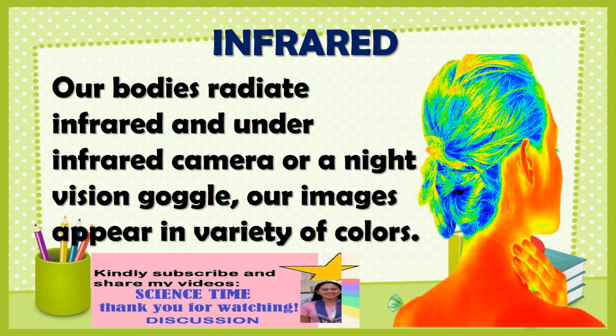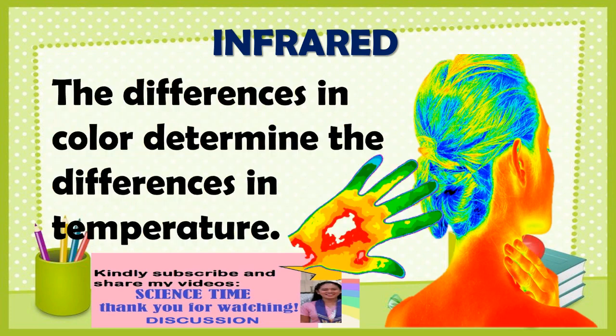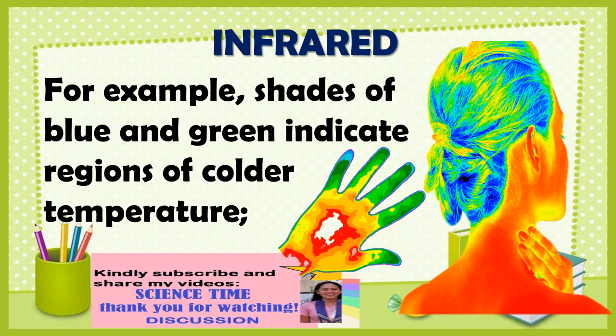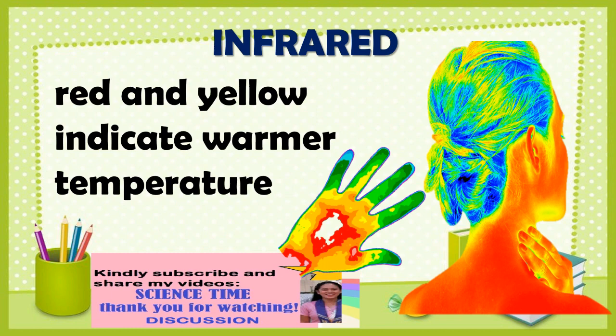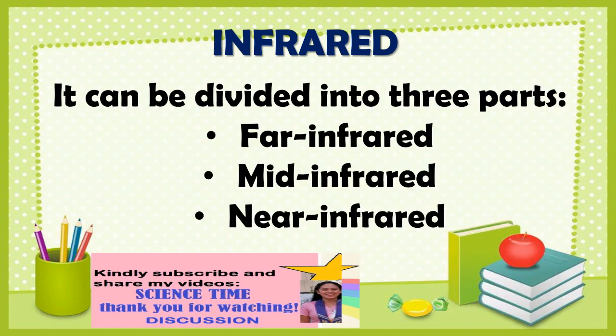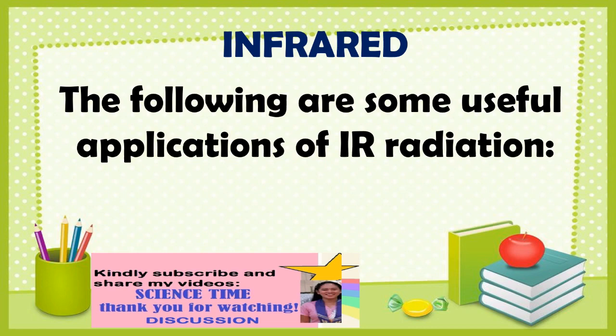Our bodies radiate infrared, and under an infrared camera or night vision goggles, our images appear in a variety of colors. The differences in color determine the differences in temperature. For example, shades of blue and green indicate regions of colder temperature, while red and yellow indicate warmer temperature. Infrared can be divided into three parts: far infrared, mid infrared, and near infrared.